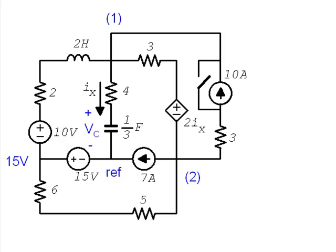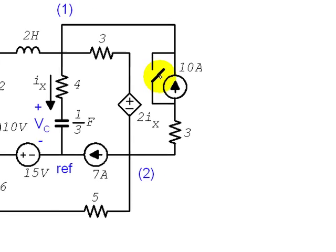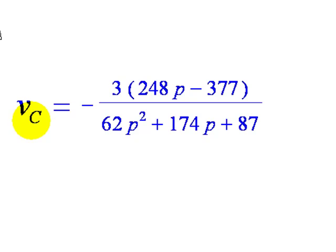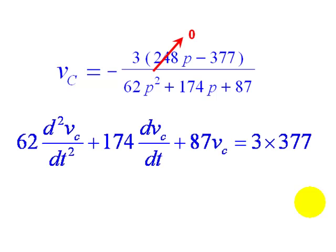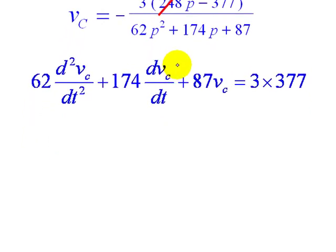In the previous video, we were given the task of solving the circuit to find the voltage in the capacitor, Vc, after we closed the switch at t equals zero. The switch had been open for a very long time. The solution to that exercise ended being the voltage in the capacitor given by an expression in terms of the P operator — a differential equation in Heaviside notation, which we also wrote using Leibniz notation. If we solve this second order differential equation, we find Vc, the voltage in the capacitor, as a function of time for t greater than zero.